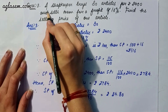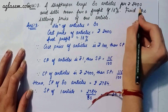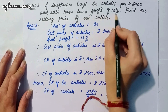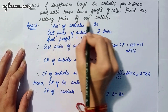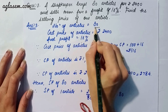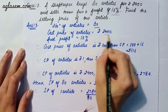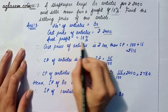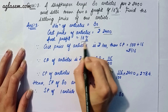Moving to our third question: a shopkeeper buys 80 articles for rupees 2400 and sells them for a profit of 16 percent. We have to find the selling price of one article. The number of articles is 80, cost price is rupees 2400, and the profit is 16 percent.